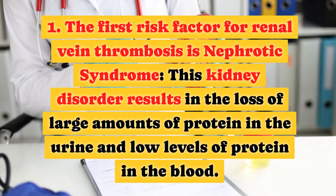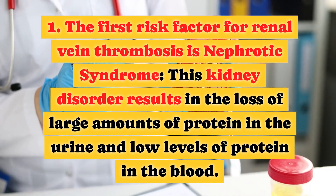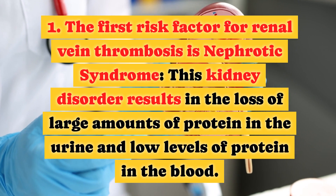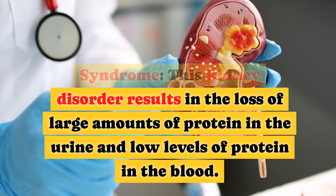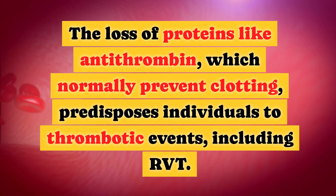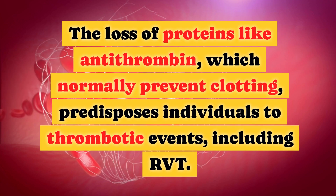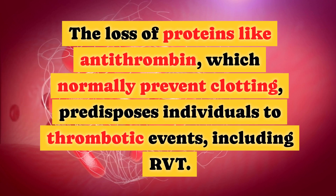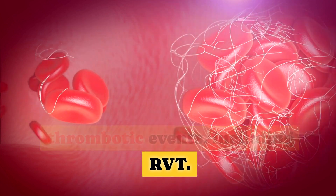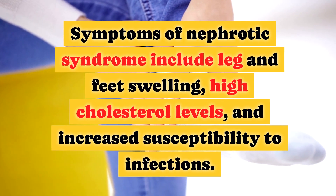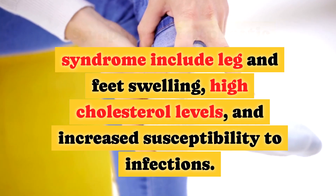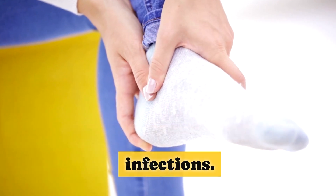1. The first risk factor for renal vein thrombosis is nephrotic syndrome. This kidney disorder results in the loss of large amounts of protein in the urine and low levels of protein in the blood. The loss of proteins like antithrombin, which normally prevent clotting, predisposes individuals to thrombotic events, including RVT. Symptoms of nephrotic syndrome include leg and feet swelling, high cholesterol levels, and increased susceptibility to infections.